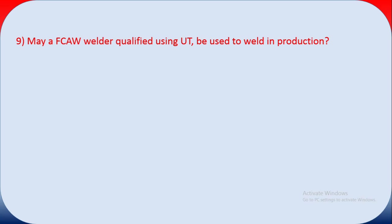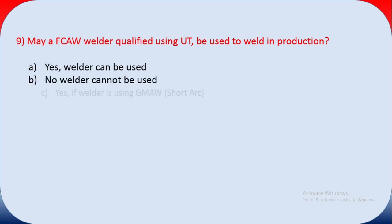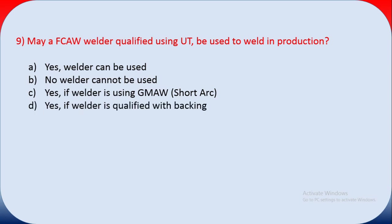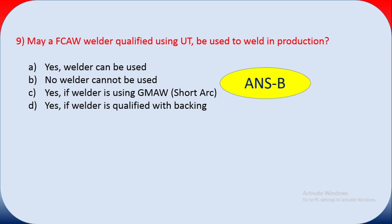Question nine: may an FCAW welder qualified using UT be used to weld in production? No — an FCAW welder cannot be qualified using UT alone. Options include yes if using GMAW-T, and yes if qualified with backing. The answer is B — you cannot qualify a welder or procedure using UT only; it cannot be used in production.